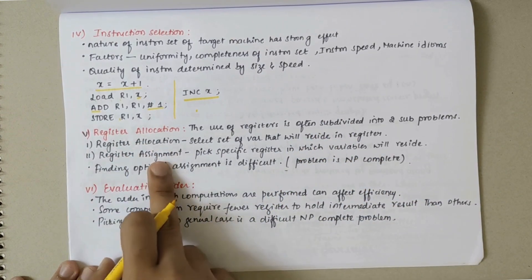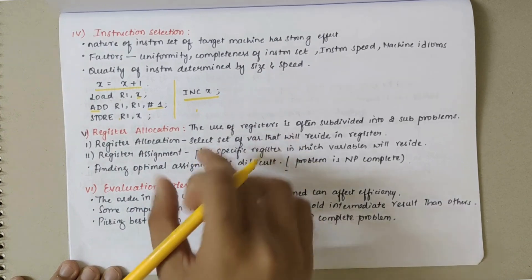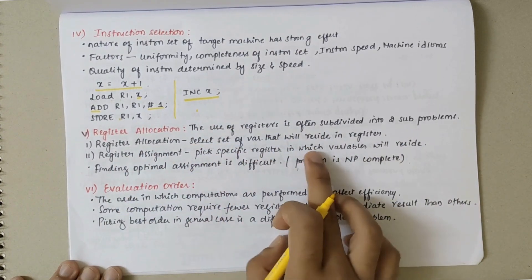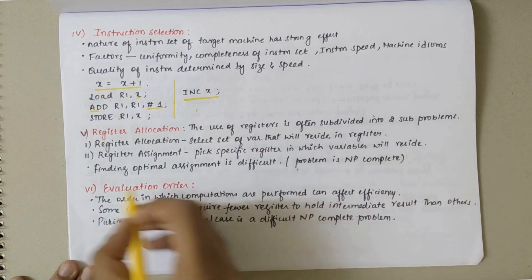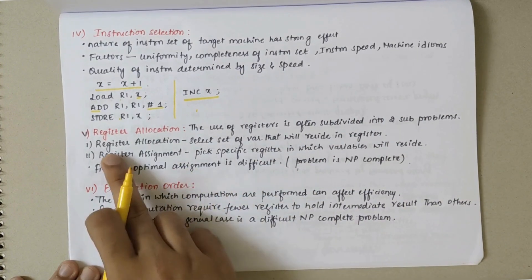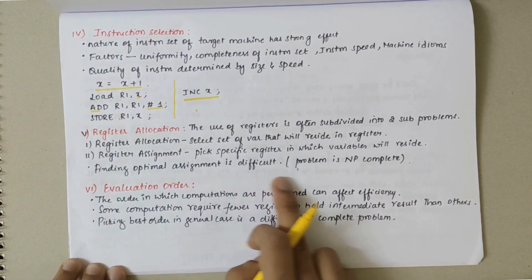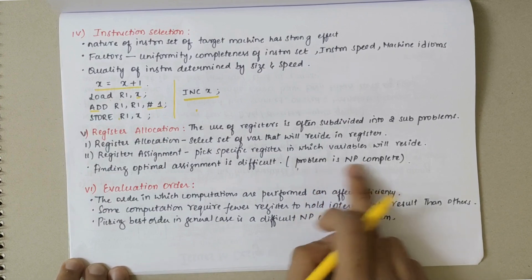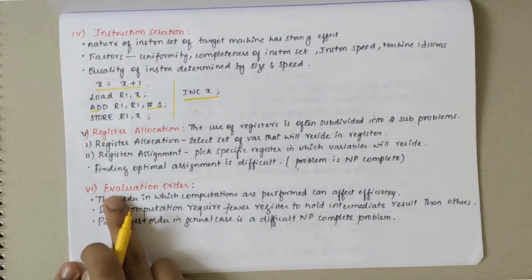The other one is register assignment in which we'll select the specific register in which the variables will reside. Finding optimal register assignment is very difficult, so it comes under NP-complete problem.